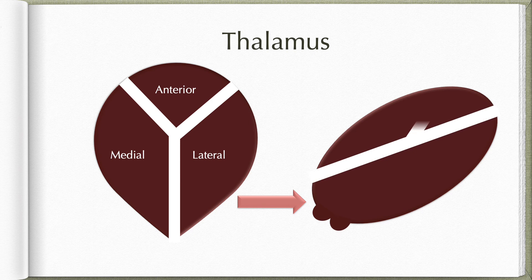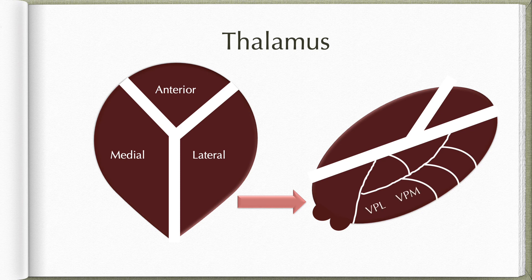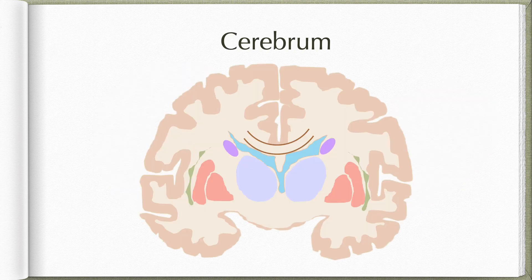The lateral nuclear group is further divided into a posterior pulvinar and lateral dorsal, and the ventral tier. The dorsal tier and ventral tier are further subdivided into multiple smaller nuclei, of which we will be concerned with two nuclei: VPL and VPM, that is the ventral posterior lateral and ventral posterior medial parts.